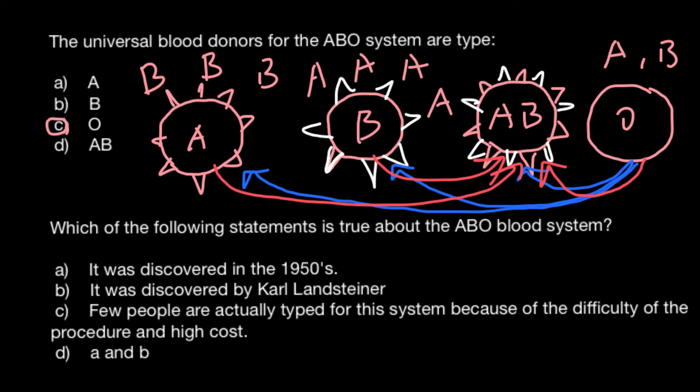We can now move to the next question: which of the following statements is true about the ABO blood system? Answer A states it was discovered in the 1950s — this is not true, because the system was discovered in 1900. We can also cross out answer D, which combines A and B, since we already ruled out answer A.